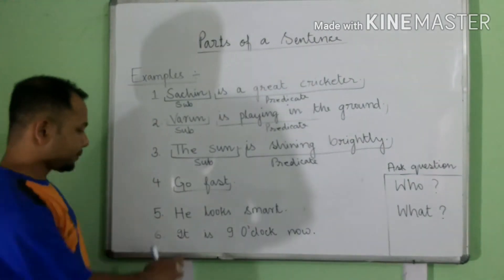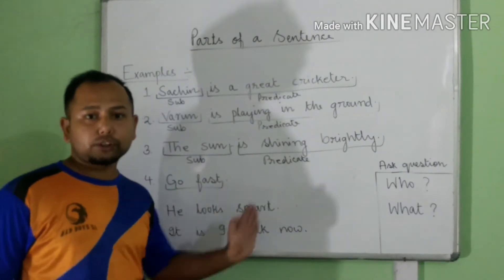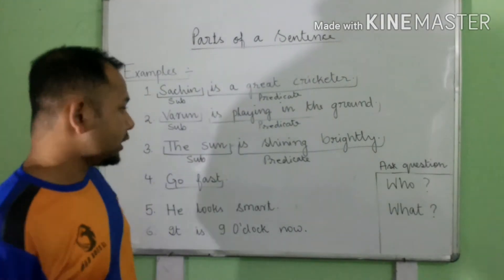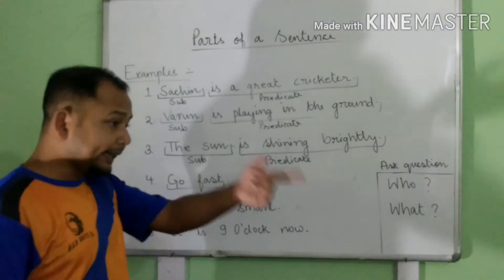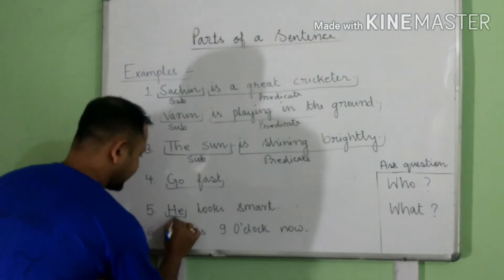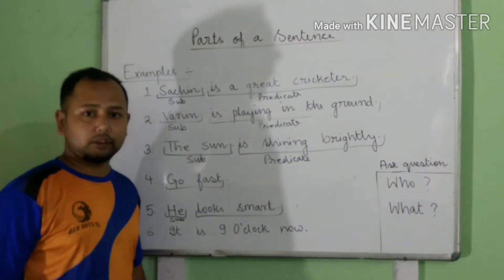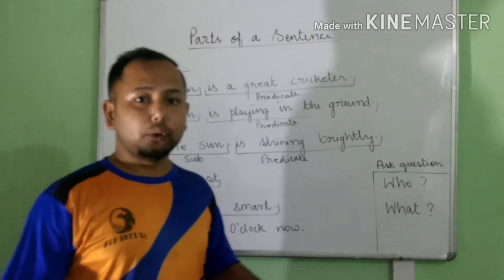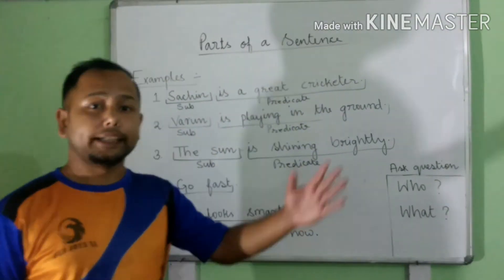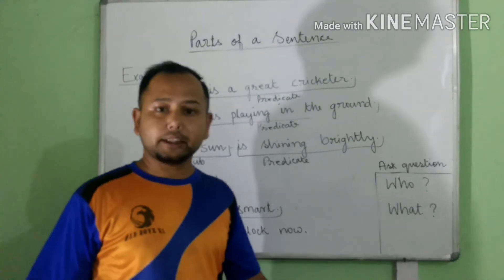Next: He looks smart. We can ask the question: who looks smart? He. So he is the subject. And looks smart is the predicate. By asking the question we can easily identify the subject.